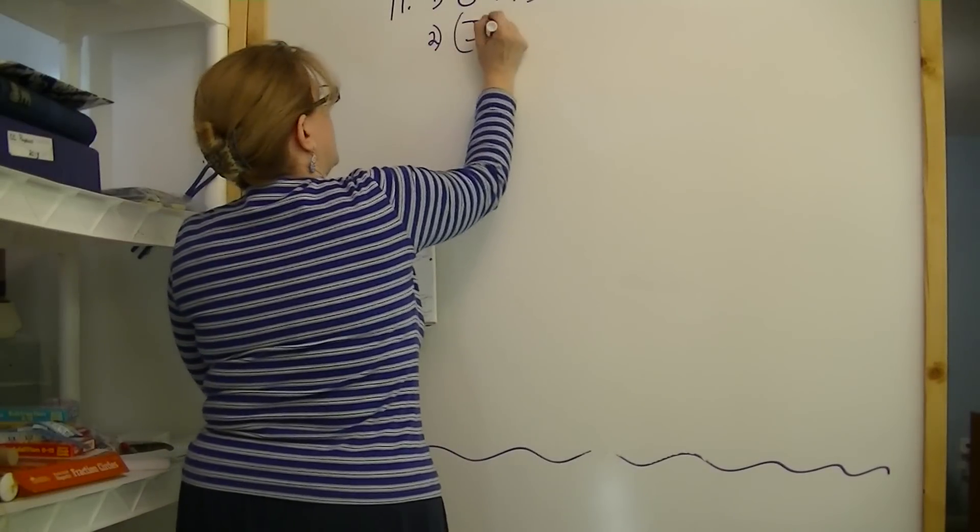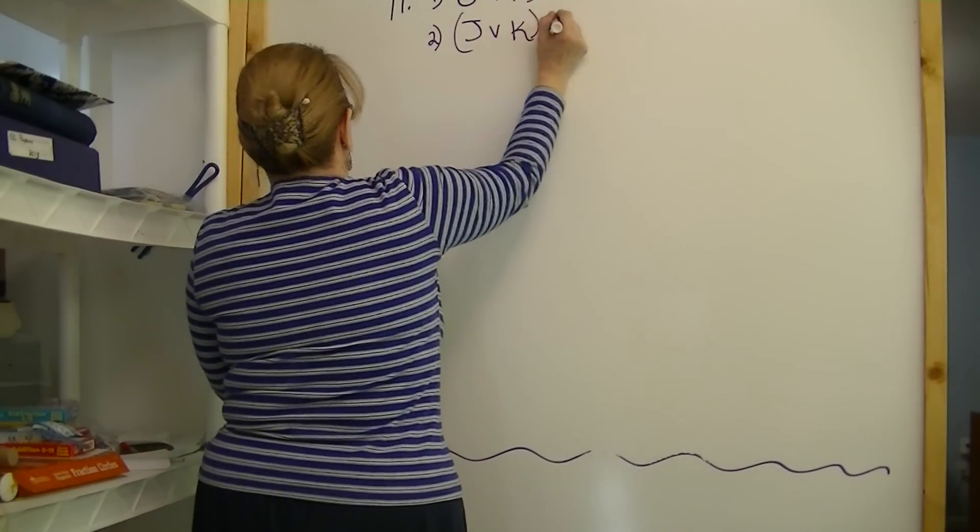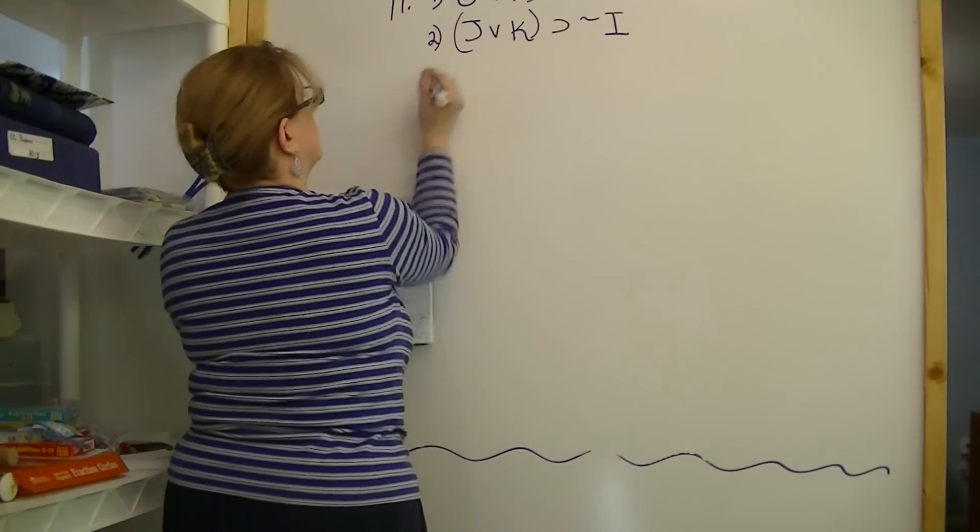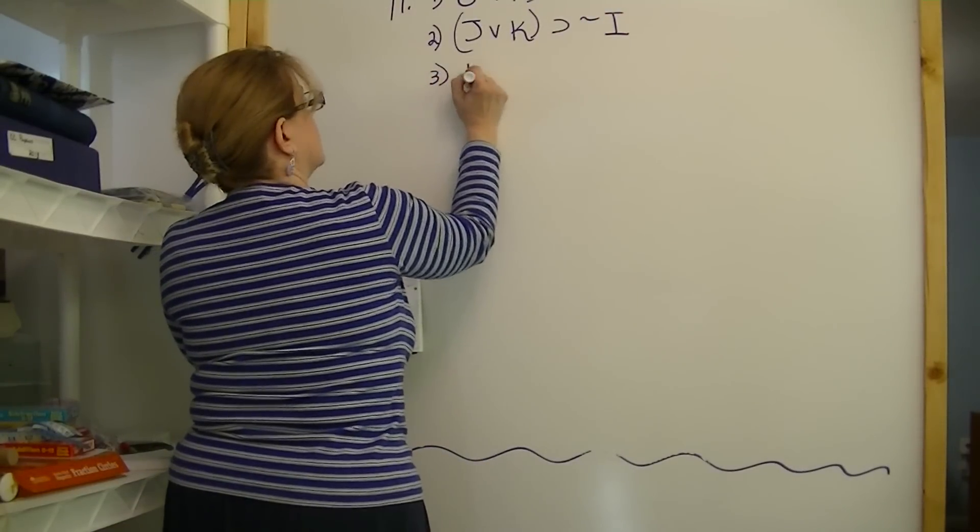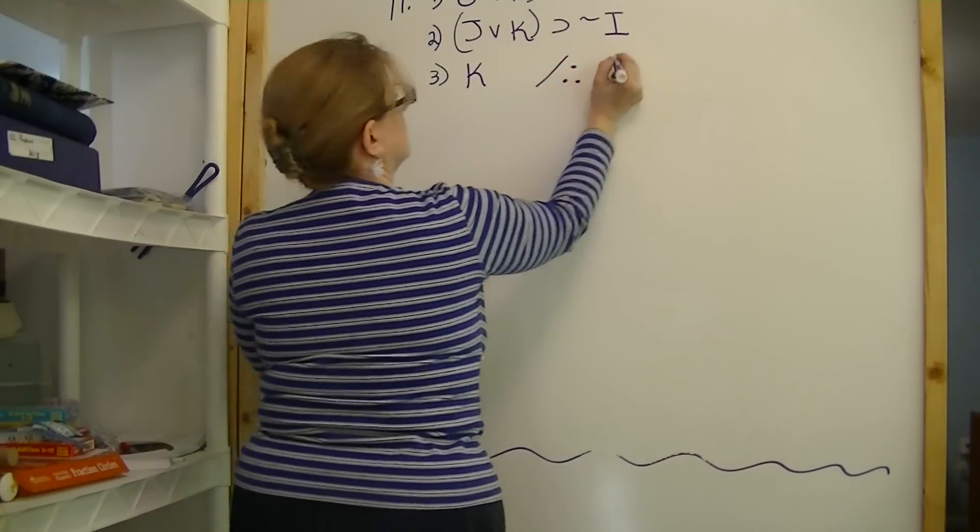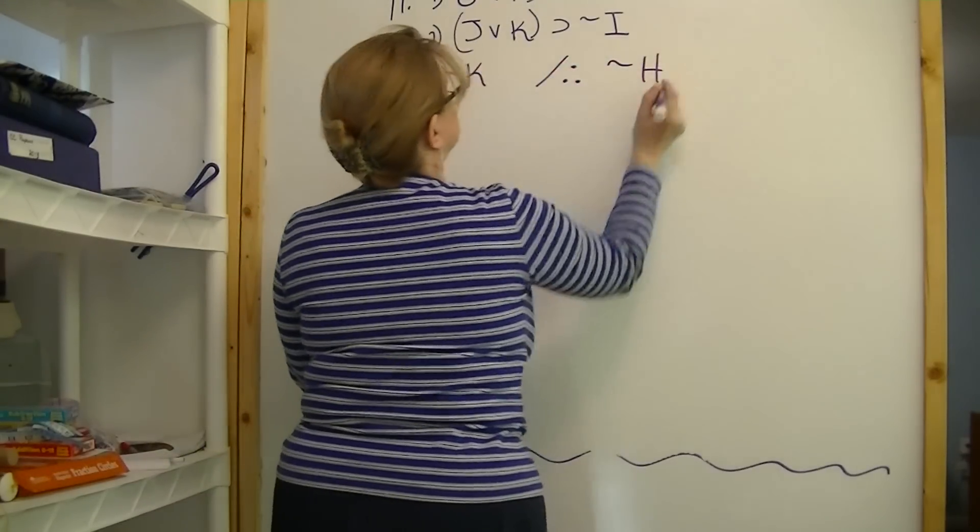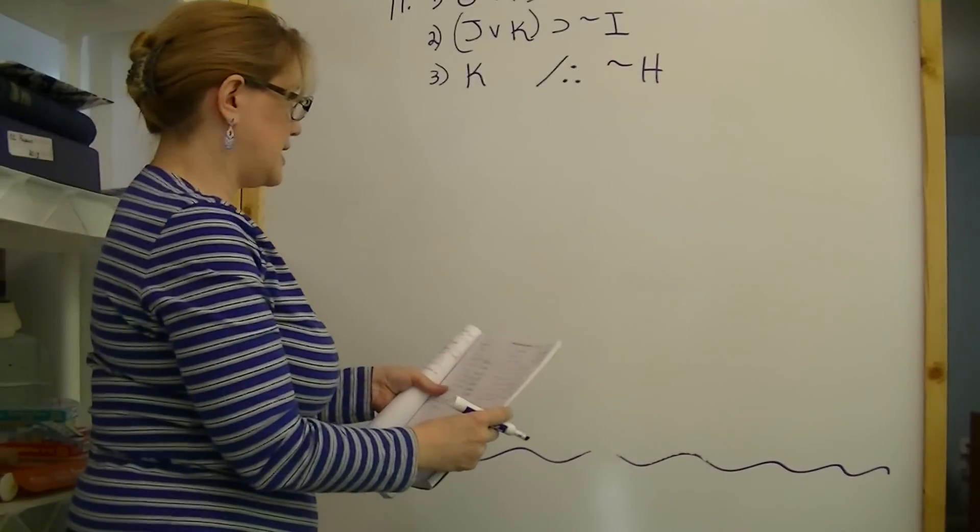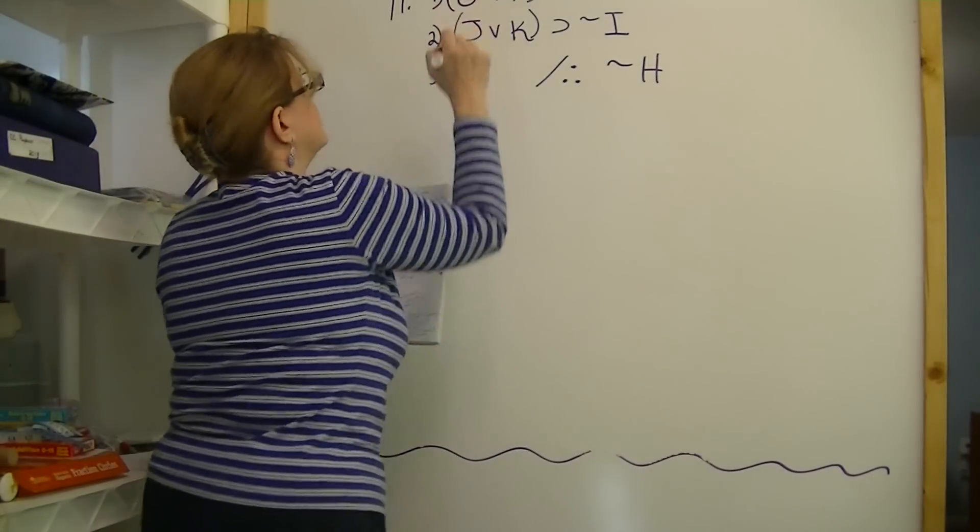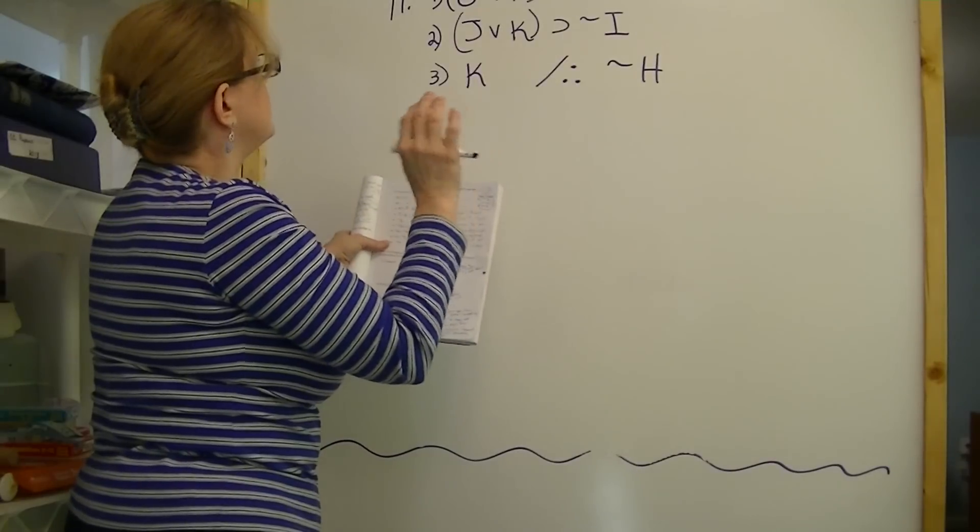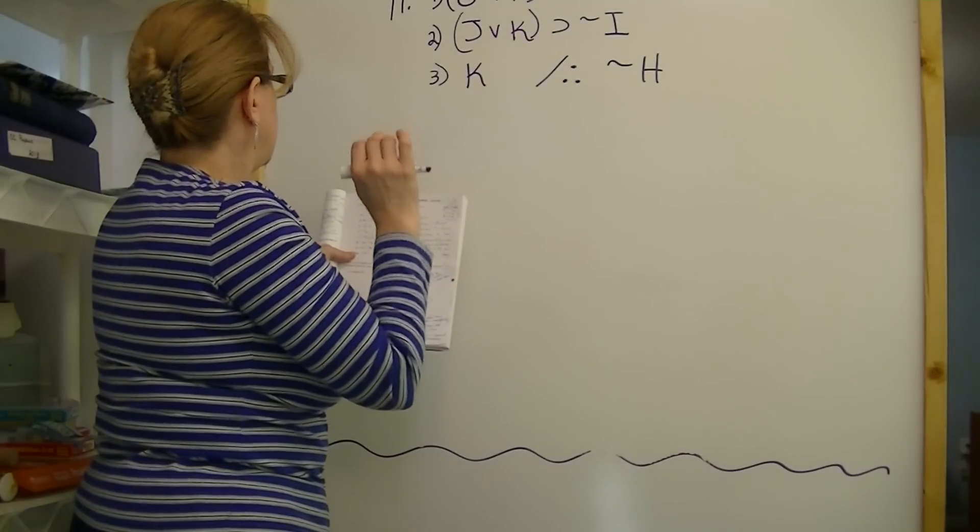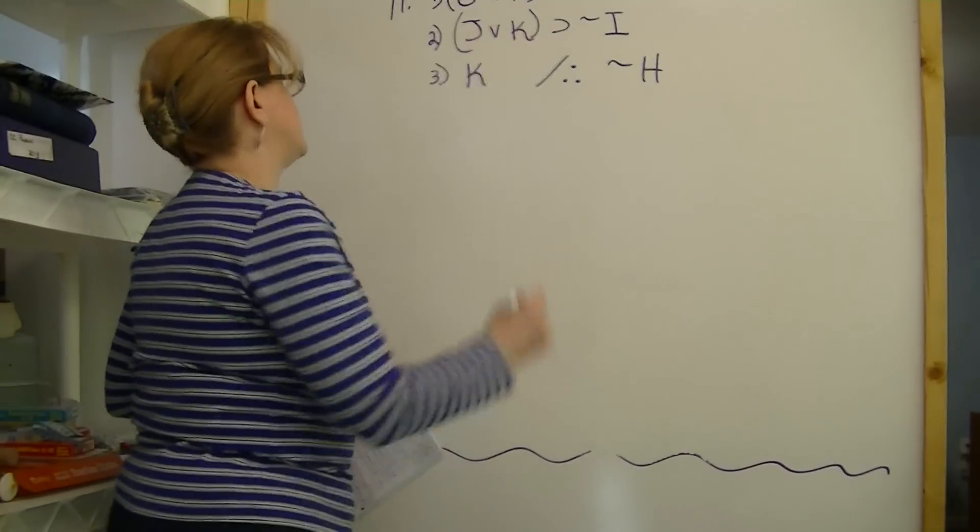Let's see. G or H. If G or H, then I. If J or K, then not I. K, therefore not H. I'm going to double check and make sure I have that done correctly. G or H. If G or H, then I. If J or K, then not I. K, therefore not H.